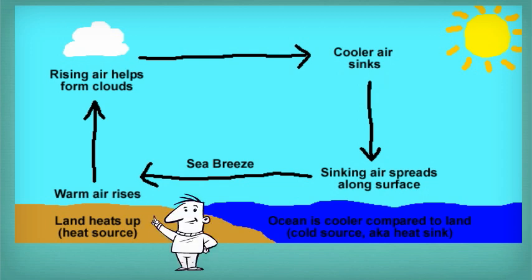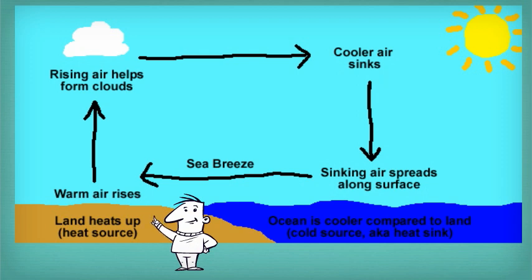This is why, at ground level, sea breezes blow from sea to land during the day. At night, on the contrary, the land cools more quickly than the sea. Because of this, the convection current reverses, as warm air rises from the sea and the breezes blow from land to sea.